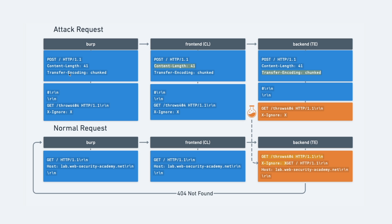To confirm that CLTE vulnerability, we use differential responses — just a pair of requests: an attack request and a normal request. We send the attack request, which arrives at the frontend server using Content-Length. We set the real Content-Length for our request body, because that ensures our entire request body is forwarded on by the frontend server to the backend server.